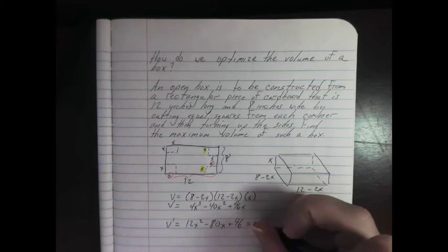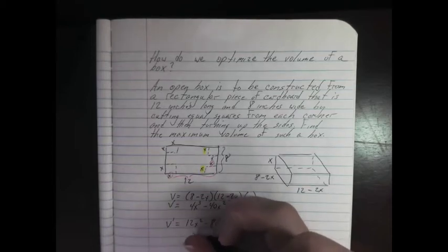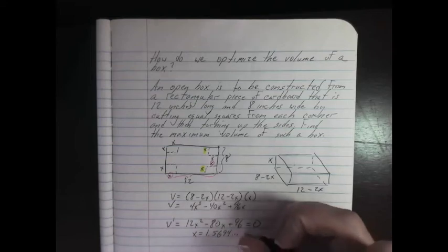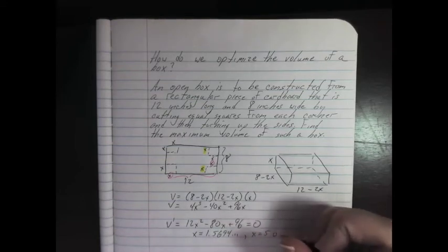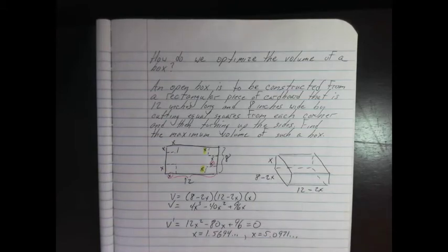Now, I'm not going to bore you with setting it equal to 0 for two reasons. One, you can do the quadratic formula. It gives a really unsatisfying answer, but it is your answer. Two, you're online and you can plug it into a million quadratic equations to solve for. Just google quadratic equation solver and you're good to go. You're going to get that x is equal to 1.5694, and x is equal to 5.0971.